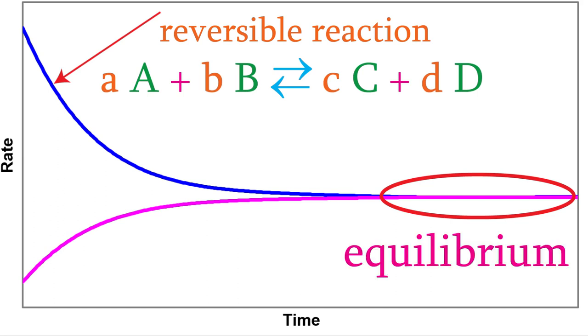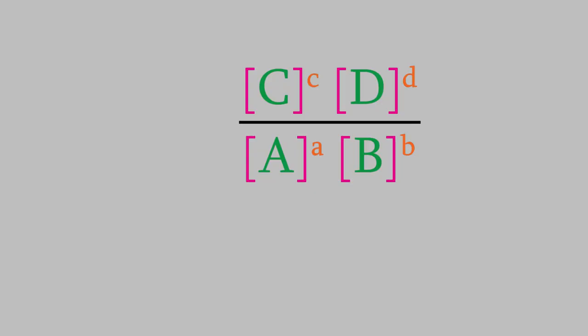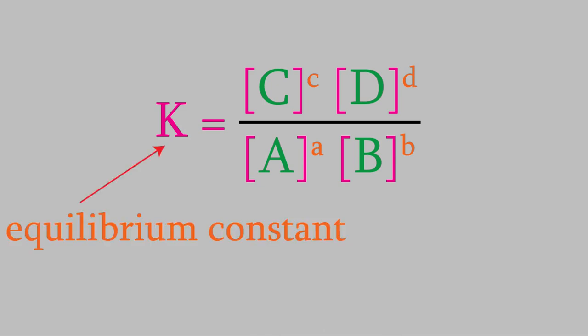We also said that, at equilibrium, the concentrations of the compounds are connected by this ratio, which is called K, the equilibrium constant.